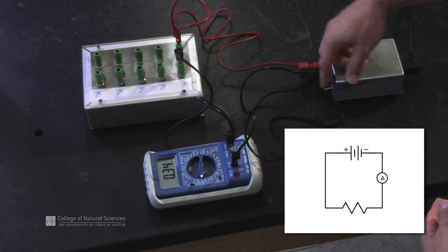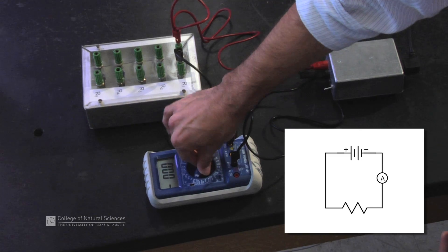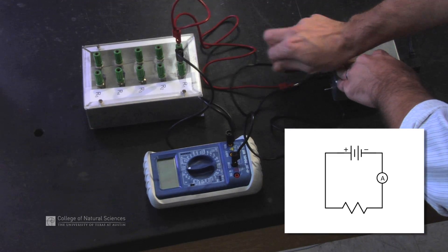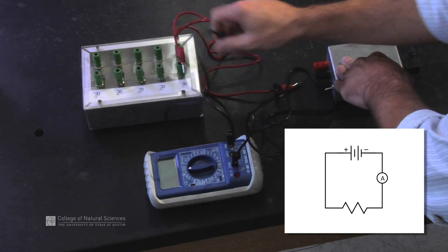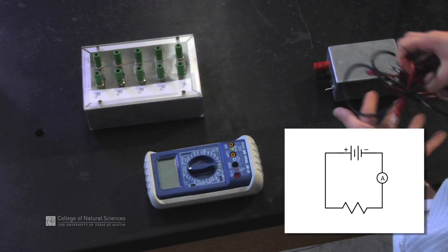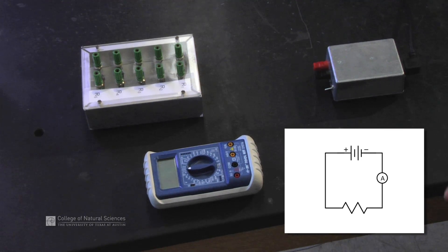turn off the power supply, turn off the multimeter, disconnect the cords, the wires, and all the components, and place everything back in the lab box to return to the lab supply window.